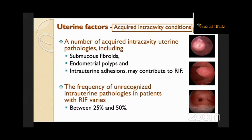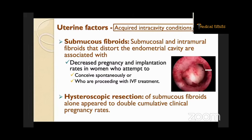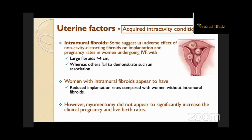The frequency of unrecognized intrauterine pathologies in patients with RIF varies between 25% to 50%. Submucosal and intramural fibroids that disturb the endometrial cavity are associated with decreased pregnancy and implantation rates in women attempting spontaneous conception or IVF. Hysteroscopic resection of submucous fibroids alone appears to double the cumulative clinical pregnancy rates. Some suggest an adverse effect of non-cavity-distorting fibroids on implantation, particularly with large fibroids over 4 centimeters. Women with intramural fibroids appear to have reduced implantation rates compared with women without, regardless of whether fibroids are distorting or non-distorting.